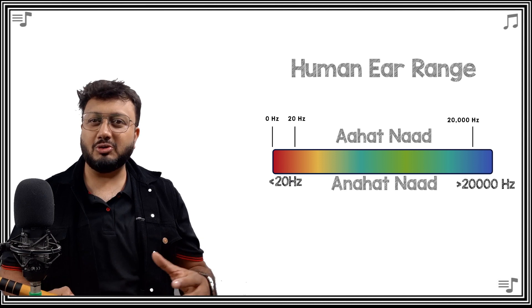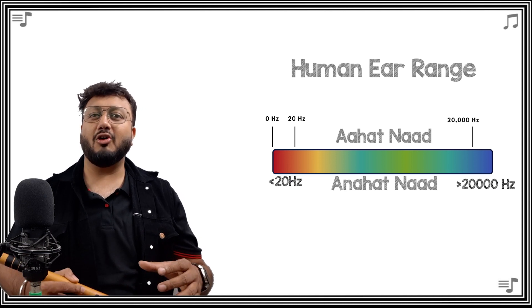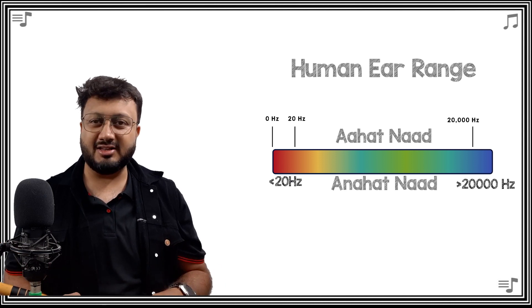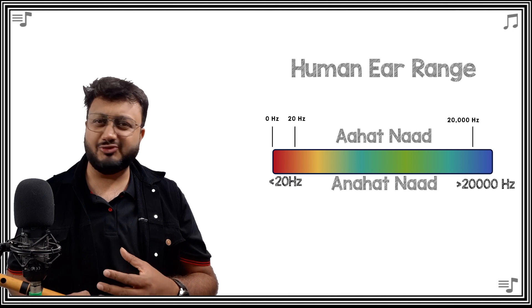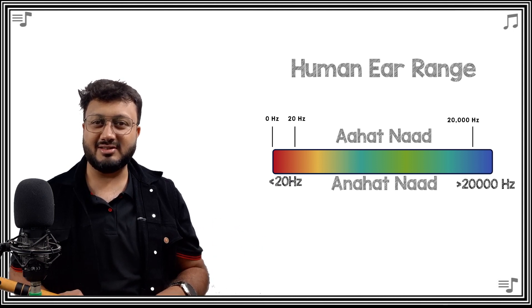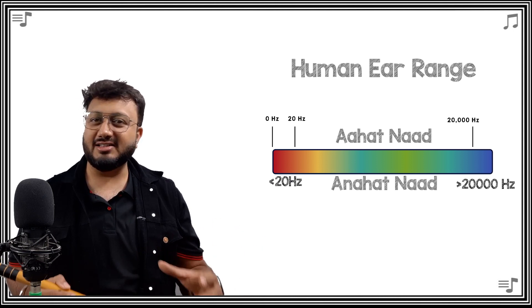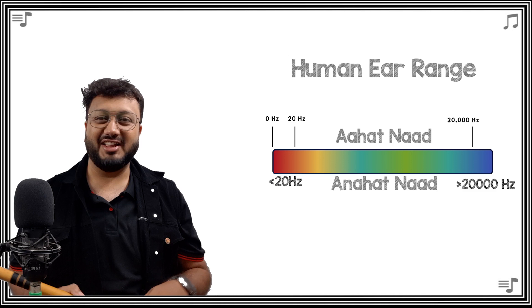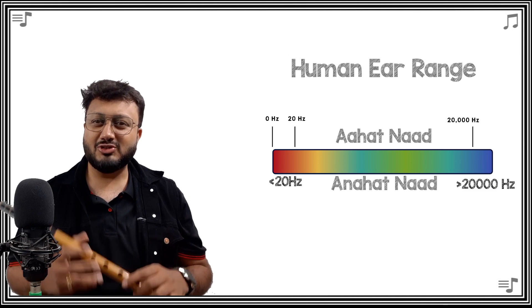The infrasonic and ultrasonic frequencies — below 20 Hz and above 20,000 Hz — are known as anahata nad. There is definitely a lot more to the philosophical theory of the concept of anahata nad, which leads to various metaphysical revelations, but that discussion would be for another day. To put it simply: nada or sound which is selected or used for music (sangeet) is called a swara or a musical note.